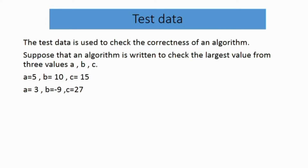Test data is used to check the correctness of an algorithm. The solution of a problem is tested to confirm if it is right or not. Different types of values are given to the algorithm as input, and the output is checked to confirm that the algorithm works correctly.